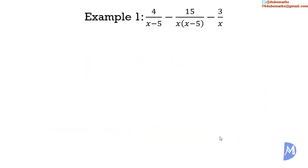Example 1: 4 over (x minus 5), subtract 15 over x(x minus 5), subtract 3 over x. The LCM of (x minus 5), x(x minus 5), and x is x(x minus 5). So we are going to express all three fractions as fractions over the LCM, that is, over x(x minus 5).